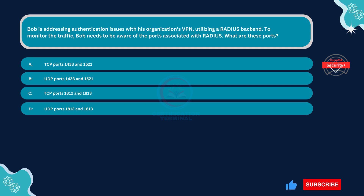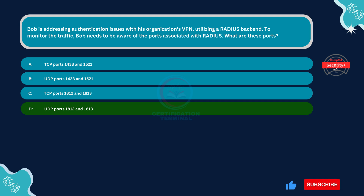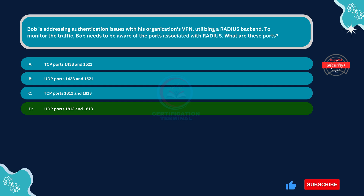The correct answer is Option D: UDP ports 1812 and 1813. RADIUS commonly uses UDP, User Datagram Protocol, for communication, and ports 1812 and 1813 are standard ports for RADIUS authentication and accounting respectively. Option D correctly identifies the protocol, UDP, and the associated ports, 1812 and 1813, used by RADIUS for authentication and accounting purposes.